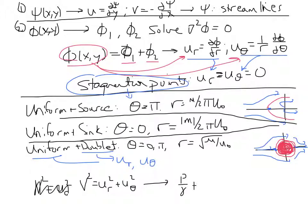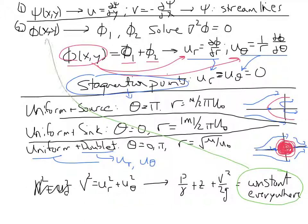p over gamma plus z plus v squared over 2g is now equal to a constant everywhere in the flow. And the reason it's a constant everywhere is that by the constraint that we've imposed by thinking about potential flows, the flow is constant everywhere because we're using the velocity potential to define it, which means the vorticity is zero. Zero vorticity, irrotational flow means Bernoulli applies between any two points in the flow.